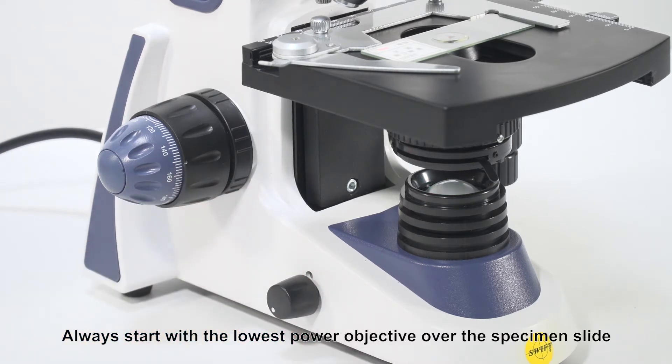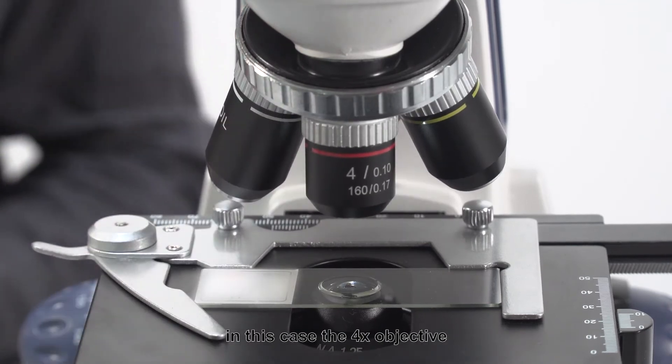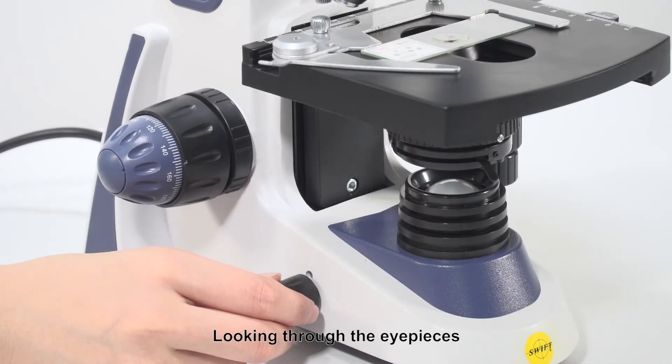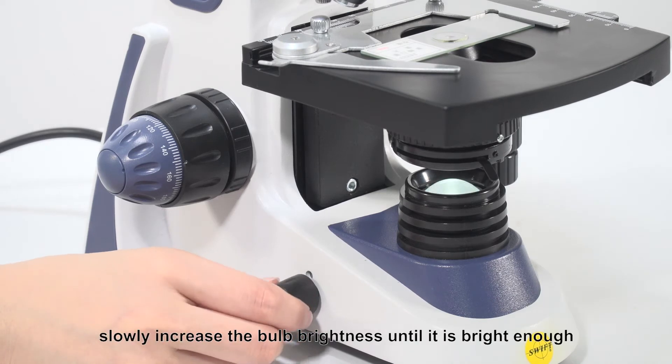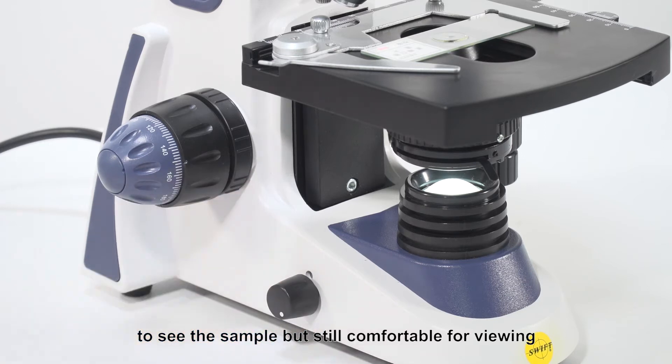Always start with the lowest power objective over the specimen slide. In this case, the 4x objective. Looking through the eyepieces, slowly increase the bulb brightness until it is bright enough to see the sample but still comfortable for viewing.